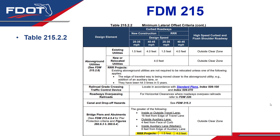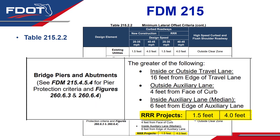Next up, looking at Table 215.2.2 for minimum lateral offsets, the addition concerns bridge piers and abutments. For existing conditions in RRR projects, some districts were having difficulty meeting these minimum lateral offsets, usually in urban conditions. A revision was made to provide more leeway for RRR projects. For RRR projects, 1.5 feet is now acceptable with design speeds of 25 to 35 miles per hour, and 4 feet is now acceptable with design speeds of 40 to 45 miles per hour.